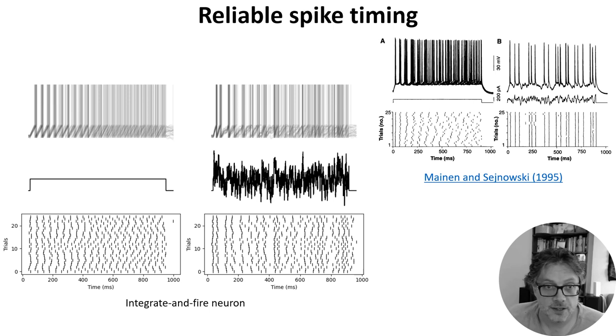But now if we repeat that with a simple integrate and fire neuron without a leak, you can see that you get unreliable spike times for both the constant and fluctuating currents.